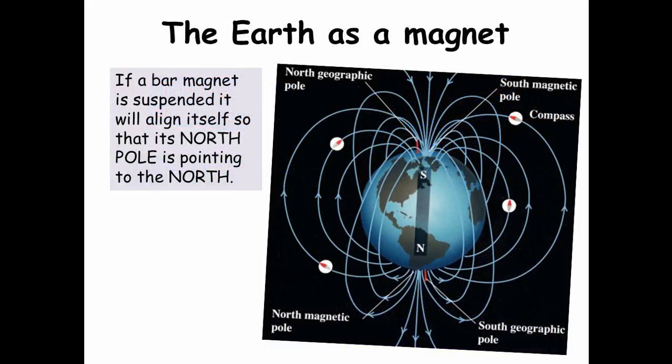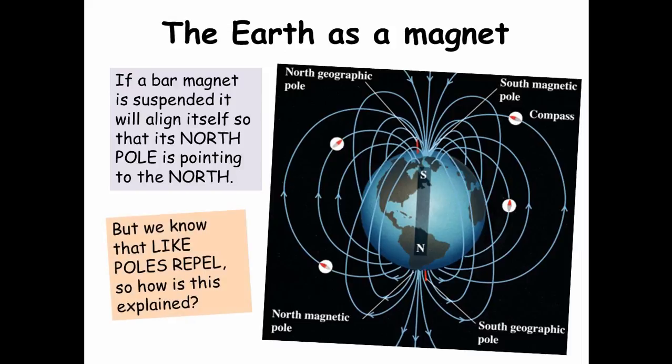The earth as a magnet. If a bar magnet is suspended, it will align itself so that the north pole is pointing towards the north. But we know that like poles repel, so how is this explained? Well, the north geographic pole is actually a magnetic south pole. So a compass will actually be attracted towards the geographic north, because it's really a magnetic south pole.